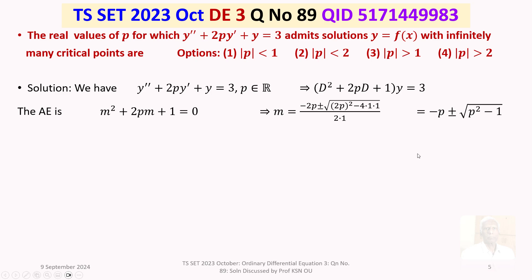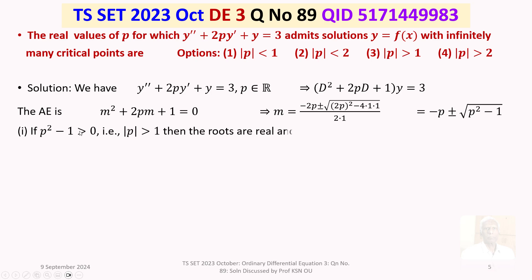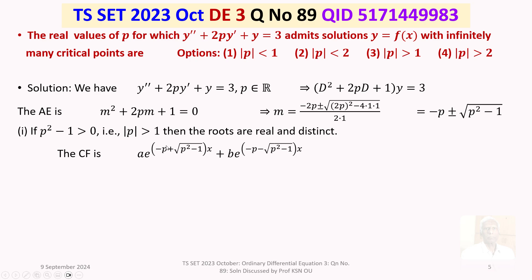To write the general solution, we find the complementary function and the particular integral, then add them. Case 1: if p² − 1 > 0, i.e., |p| > 1, the roots are real and distinct. The complementary function is y_c = Ae^((−p + √(p²−1))x) + Be^((−p − √(p²−1))x), where A and B are arbitrary constants.